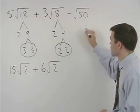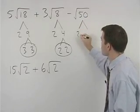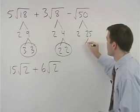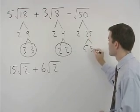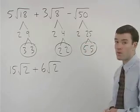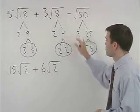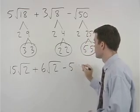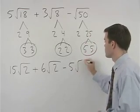In the last term, 50 factors as 2 times 25, and 25 is 5 times 5. So a 5 comes out of the radical, and we have minus 5 times the square root of 2.